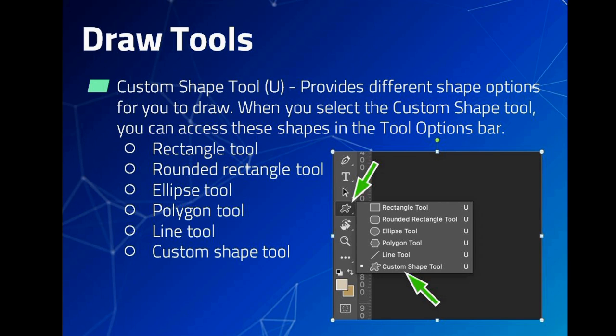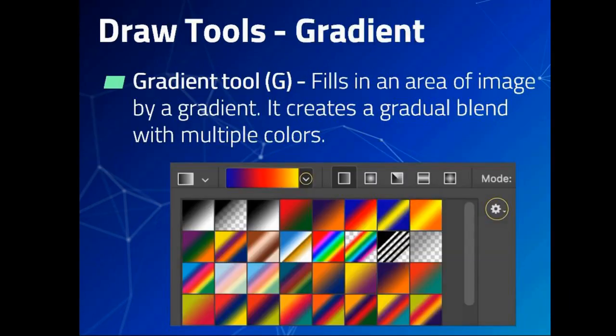The Custom Shape tool lets you create different shapes like rectangle, rounded rectangle, ellipse, polygon, line, and custom shapes. The Gradient tool is used to fill the area of an image with a gradient, creating a gradual mix of multiple colors. Various options available in the Gradient tool are shown in the figure.